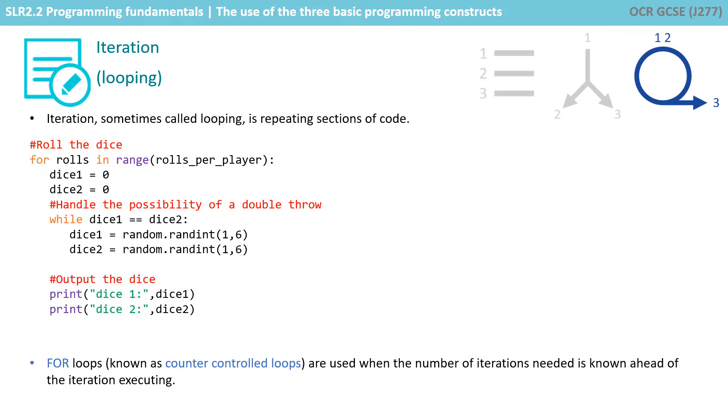There are several ways of doing this. A popular one is the for loop. A for loop is known as a counter controlled loop, and we use this when the number of iterations needed is known ahead of the iteration executing.